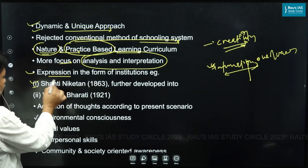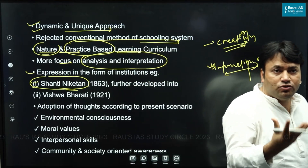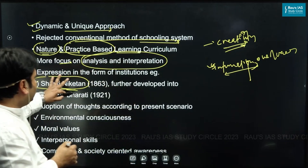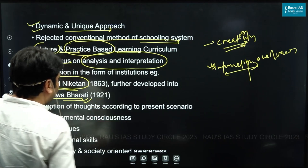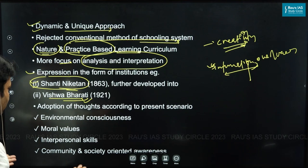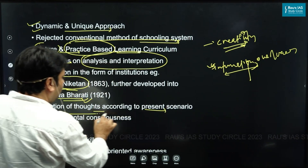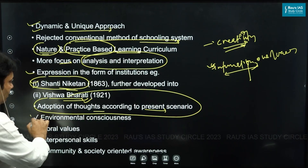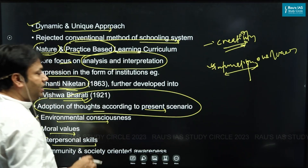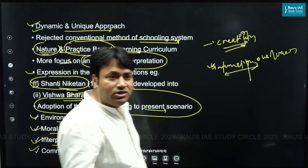Tagore's ideas were given practical form through Shantiniketan, which further developed into Vishwa-Bharati University. He also discussed that education should adopt thoughts according to the present scenario, promoting environmental consciousness, moral values, interpersonal skills, and community and society-oriented awareness among students in coming generations.